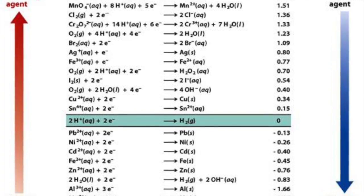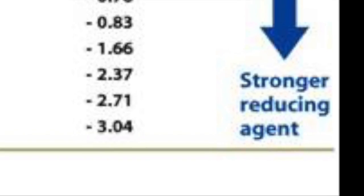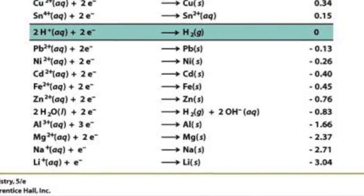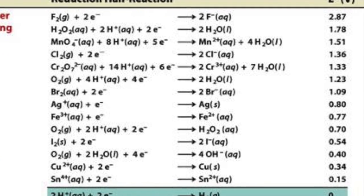This chart shows the electrical potential of some half cells when they are reducing. The ones that are good at oxidizing are here, and the ones that are good at reducing are here.